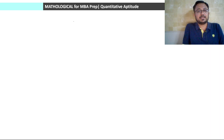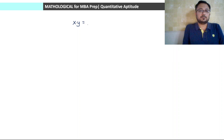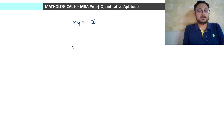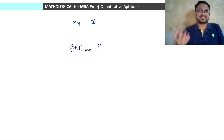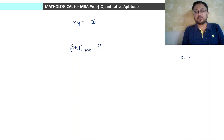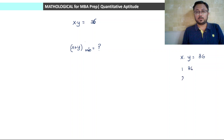Let us say the question is: given that x into y is equal to 36, we need to find out the minimum value of x plus y. For example, what pairs of numbers multiply to give 36? Numbers could be 1 and 36, 2 and 18, 3 and 12, 4 and 9, and 6 and 6.